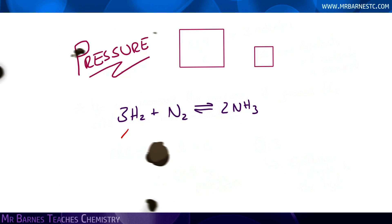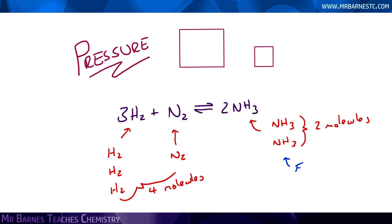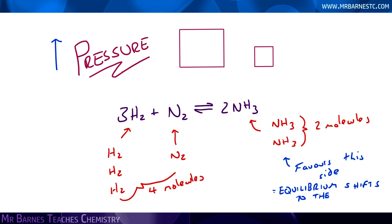Again, looking at the Haber process: I've got three hydrogens and one nitrogen, so I have four molecules for my reactants and two NH3 molecules. Therefore I have a ratio of four to two — there are fewer molecules on the right-hand side. So if I increase the pressure, it favours the right-hand side, equilibrium will shift to the right, and my yield of ammonia will increase.